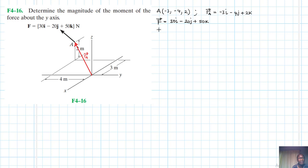So what do we do? The moment about the y is going to be equal to the unit vector along the y-axis dot, or RA cross F. Okay, so we can write this. Let's plug everything in.